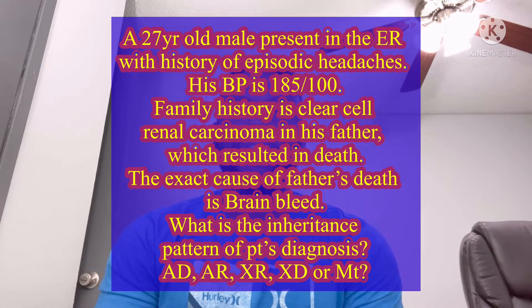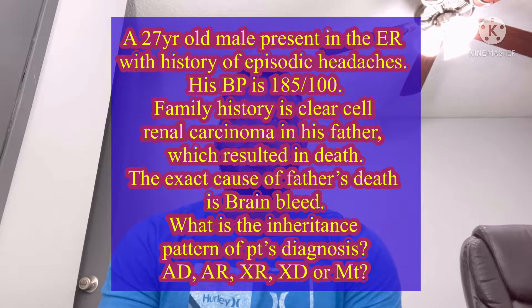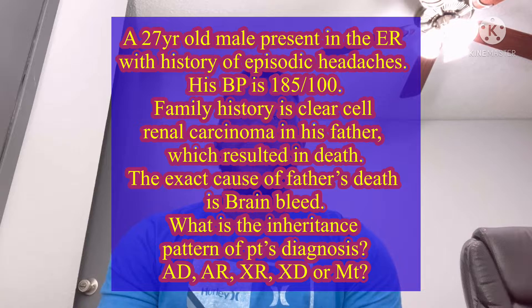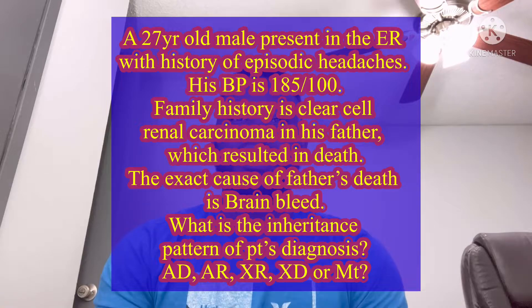The answer choices are: A, autosomal dominant; B, autosomal recessive; C, X-linked recessive; D, X-linked dominant; and E, mitochondrial pattern inheritance. You can diagnose this patient as most likely having Von Hippel-Lindau disease. Von Hippel-Lindau is associated with clear cell renal carcinoma. These patients also have capillary hemangiomas, pheochromocytoma, and can have pancreatic tumors as well.